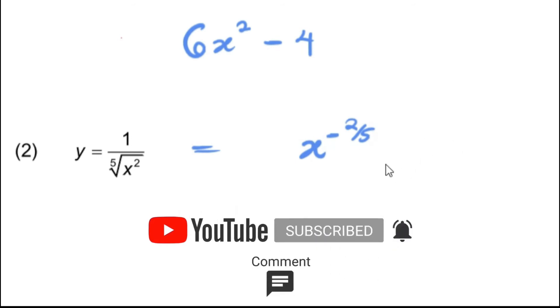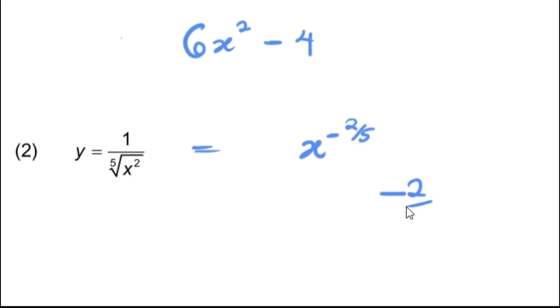So the differentiation of this would be—I multiply this negative 2 over 5 times the 1 that was originally here, and I subtract 1 from the negative 2 over 5, and that would give you negative 7 over 5, and that will be your answer.